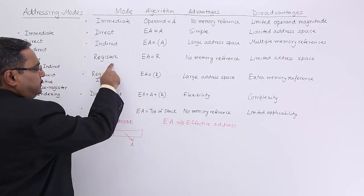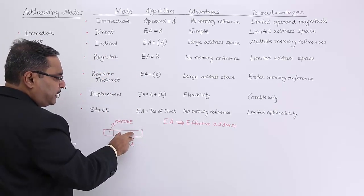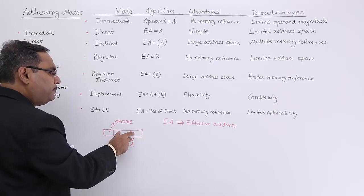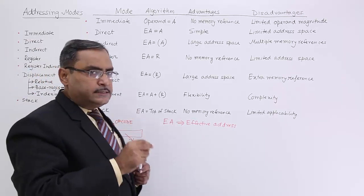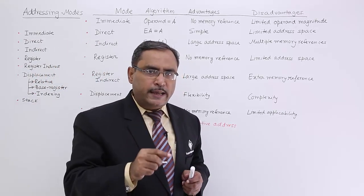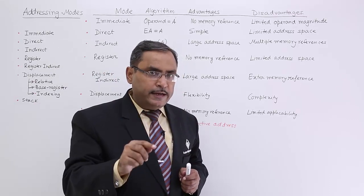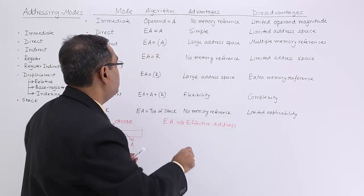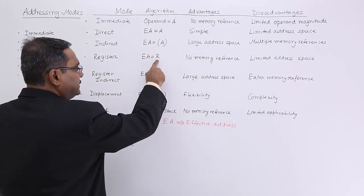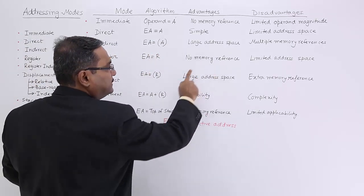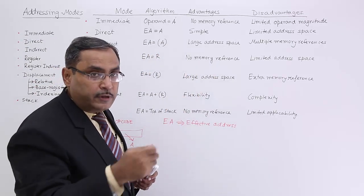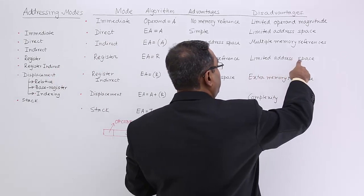Next one is the register. Here in this particular address part I am having my register name and register number or register name will denote that that register. That register is containing the operand. Effective address is the register name.